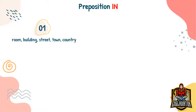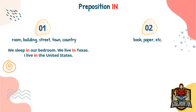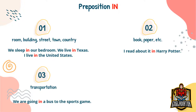We use the preposition 'in' if we want to say that something is in a room, in a building, in a street, town, or country. For example: we sleep in our bedroom, we live in Texas, I live in the United States. We also use 'in' to say something is in a book or on paper — for example, I read about it in Harry Potter. 'In' is also used with transportation, for example: we're going in a bus to the sports game. We also use 'in' with pictures or the world — for example: you look great in that picture.